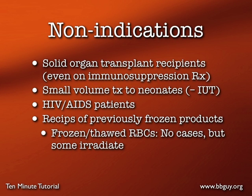There is widespread agreement that solid organ transplant recipients don't need irradiation, even if pharmacologically immunosuppressed. Normal small-volume transfusions to neonates probably don't need irradiation unless the baby had an intrauterine transfusion. Interestingly, patients with HIV-AIDS don't need irradiated blood — there has never been a reported case of an HIV-AIDS patient developing TA-GvHD. Also, this applies to cellular blood products that have not been frozen: FFP, cryoprecipitate, and even frozen-thawed red cells probably don't need to be irradiated, and most places don't irradiate them.